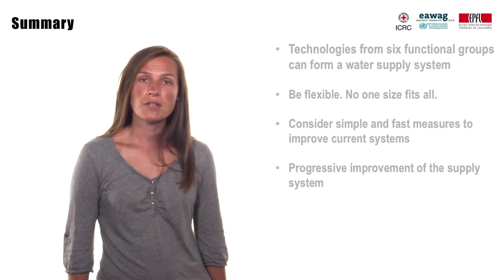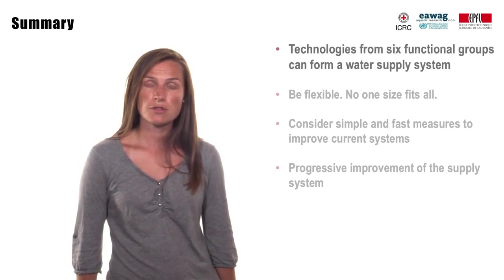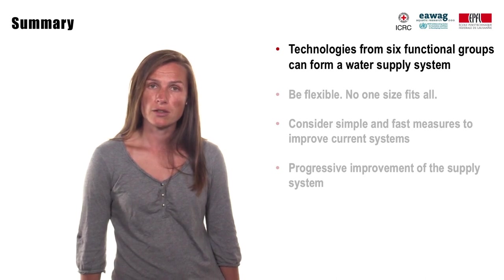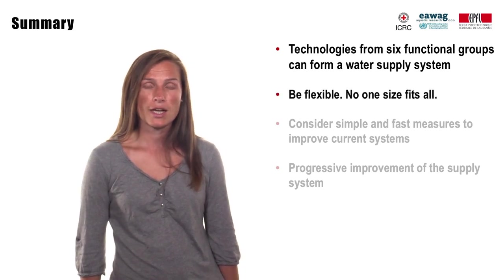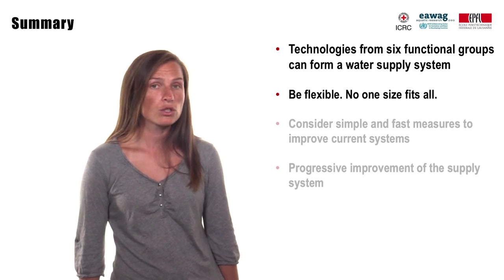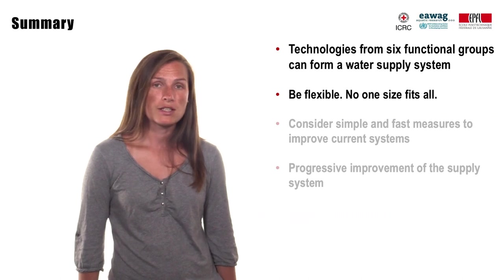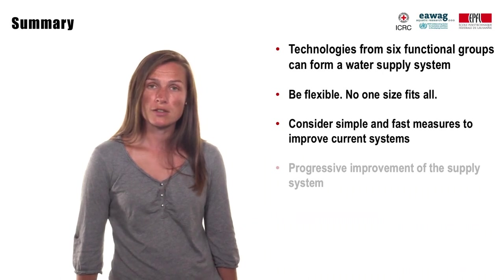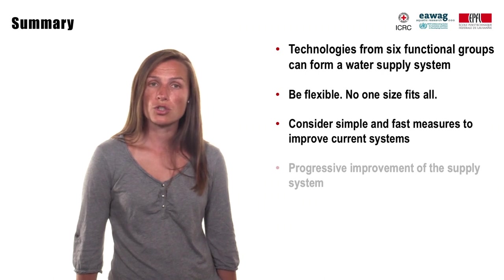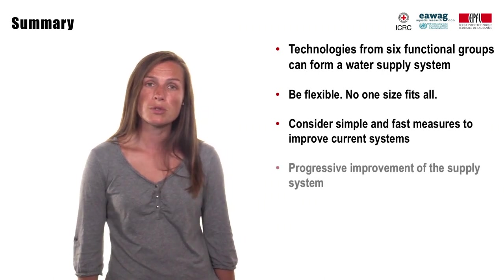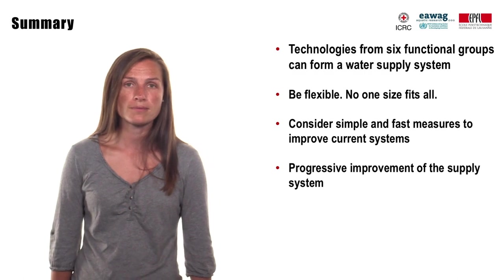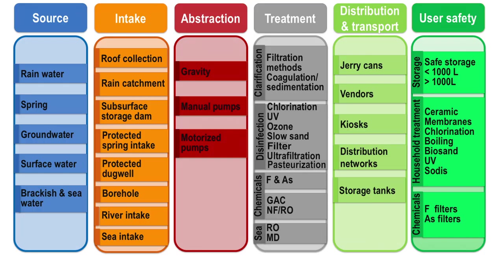In this lecture we have looked at different water supply systems as a combination of technologies from six functional groups. Any water supply system can be pictured this way, independently of its scale. However, flexibility is always required — adapt your system to local needs, geography, availability of skills and resources, as well as preferences and needs. Never one size fits all. Simple and fast measures to improve current systems before designing and installing more sophisticated water supply should always be considered in the short term. On a longer term, progressive improvement of the supply system as well as safeguarding it against contamination are further crucial steps. During the next lectures, we will move through all functional groups in more or less detail and discuss technologies of each group.